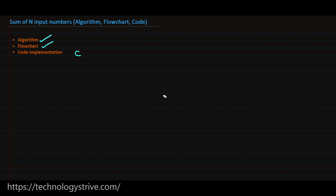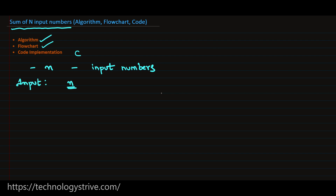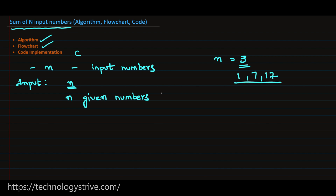Let's discuss the problem in detail. We need to find the sum of n input numbers. First we need to know what n is, and accordingly we need to get the input numbers. The input will be a number n and n given numbers. For example, if n equals 3, we need to provide 3 different numbers, such as 1, 7, and 17. The sum of these 3 numbers is 1 plus 7 plus 17, which equals 25.